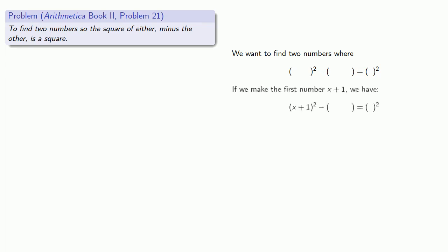So if we make our first number x plus one, we have x plus one squared minus something should be a square. We know that x plus one squared is x squared plus 2x plus one, and if we subtract 2x plus one, we'll get a square.